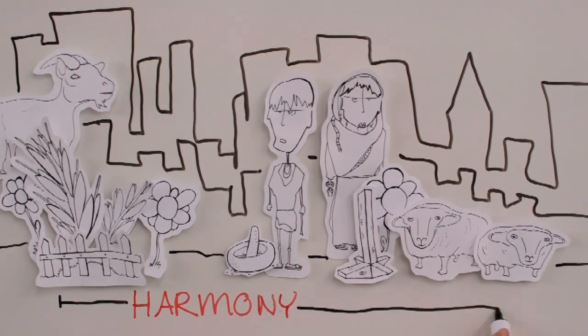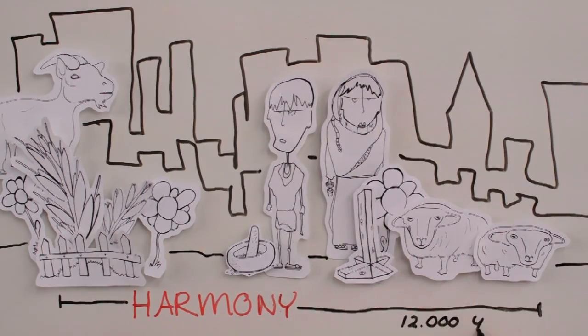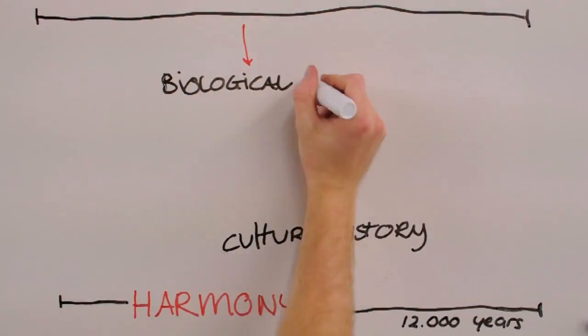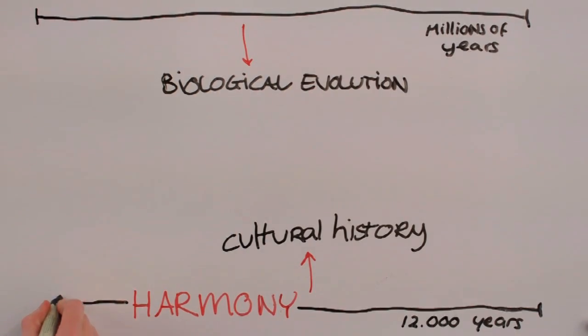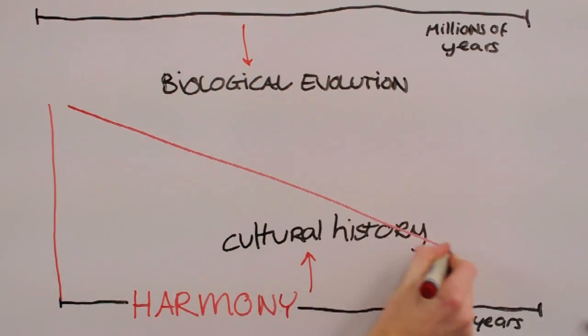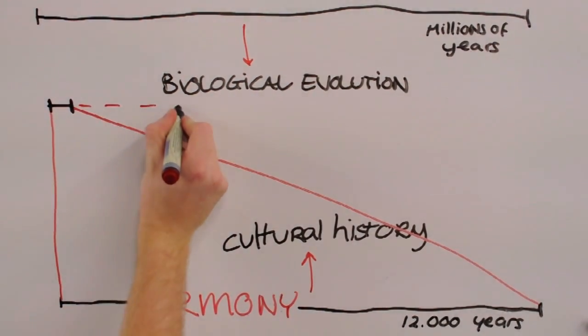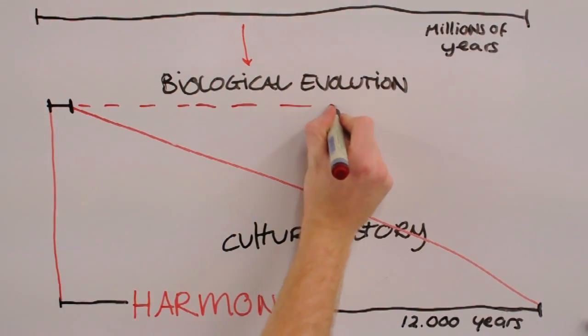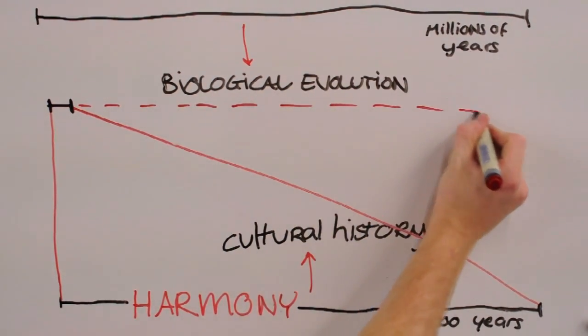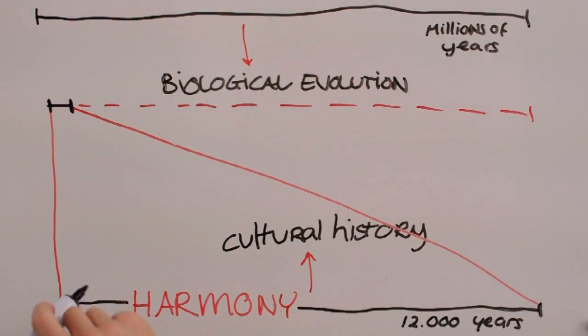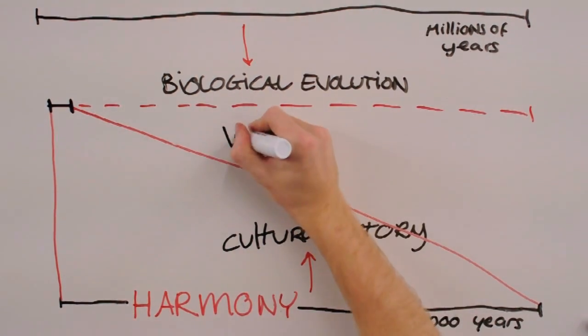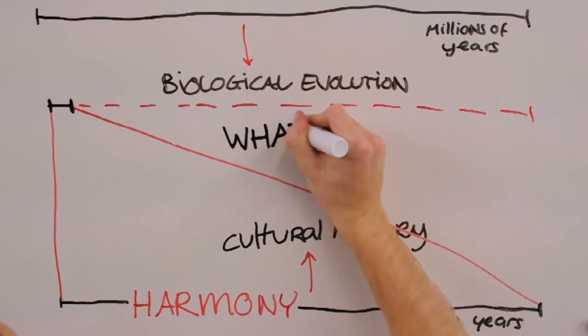The history of man is divided very unequally. There is his biological evolution, all the steps that separate us from our ape ancestors. Those occupied some millions of years. And then there is his cultural history, all that separates us from the few surviving hunting tribes of Africa or food gatherers of Australia. And all that enormous cultural gap is in fact crowded into a few thousand years.